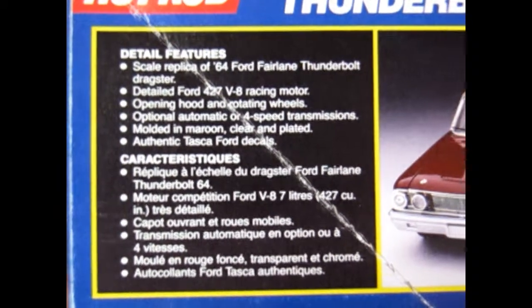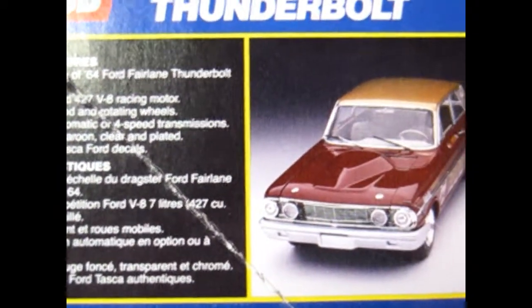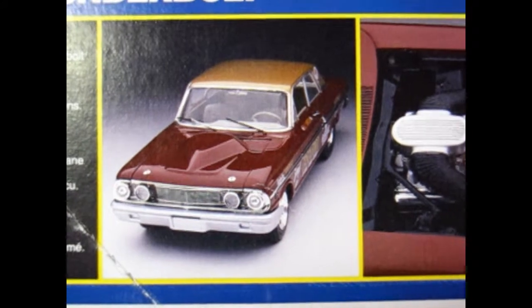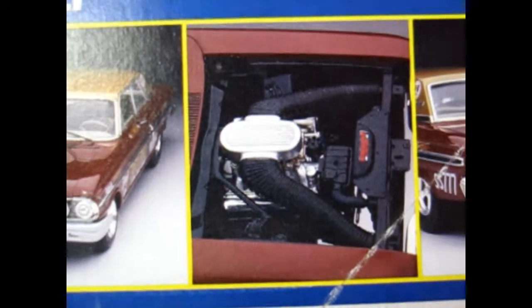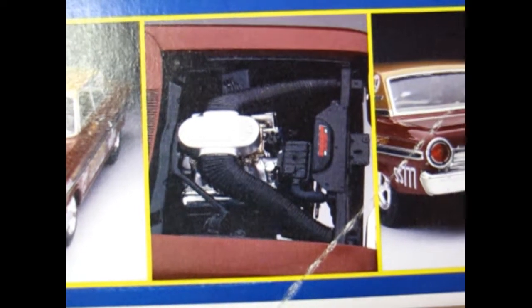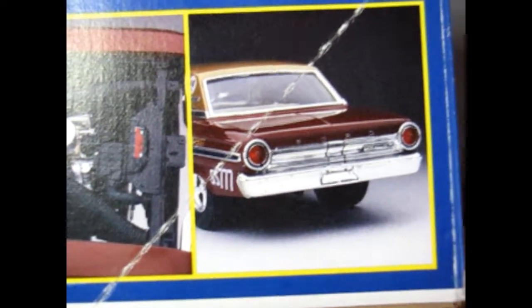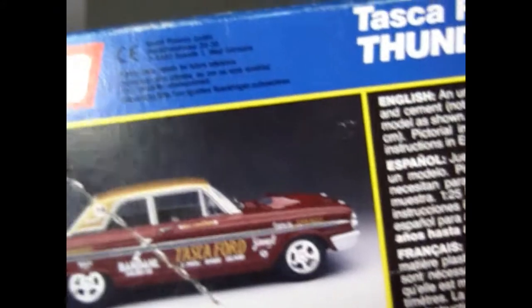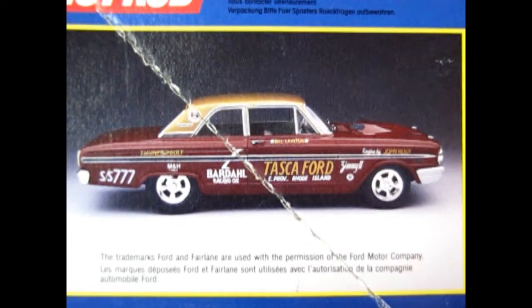Let's move across here and check out the photographs on this box art. There's our Thunderbolt itself. As we move across here there's the engine bay showing that great 427 drag racing motor. Our final picture on the box is of the back end of the car.